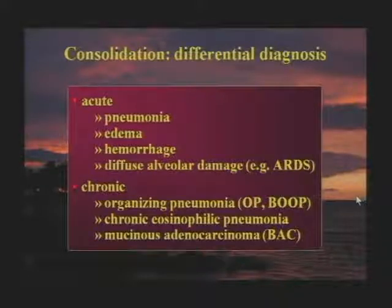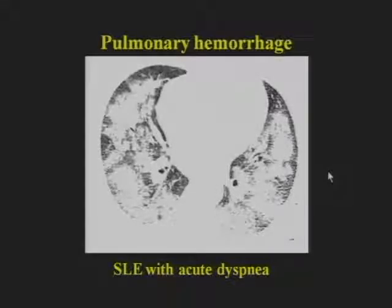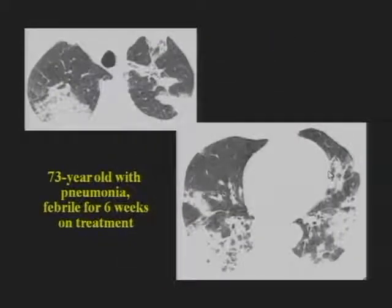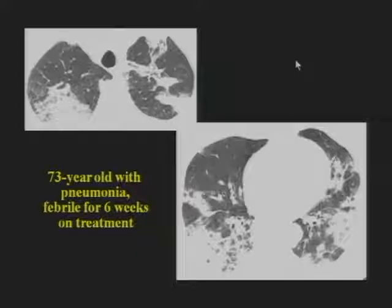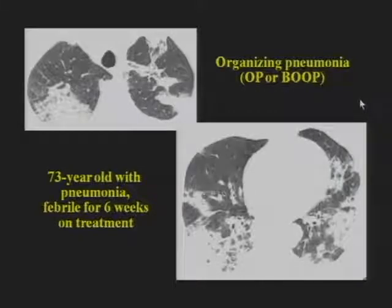BAC is not a term we'll be using in about a year; the preferred term is mucinous adenocarcinoma. A patient with lupus and acute dyspnea shows consolidation — acute symptoms, so differential is pneumonia, edema, hemorrhage; this was pulmonary hemorrhage. A 73-year-old with pneumonia and fever for six weeks on treatment has chronic symptoms with consolidation — differential is organizing pneumonia, chronic eosinophilic pneumonia, and invasive mucinous adenocarcinoma. This case was organizing pneumonia with patchy consolidation, a very typical finding.